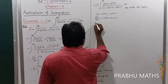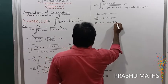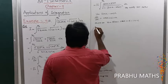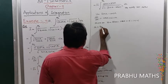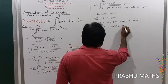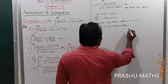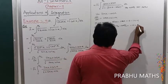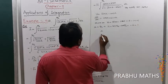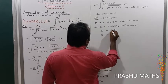Now changing the limits: when x = 0, u = sin 0 − cos 0 = 0 − 1 = −1. When x = π/2, u = sin(π/2) − cos(π/2) = 1 − 0 = 1. So x = 0 maps to u = −1, and x = π/2 maps to u = 1.